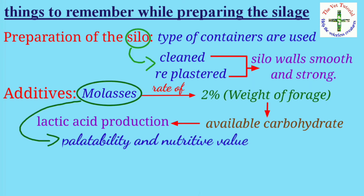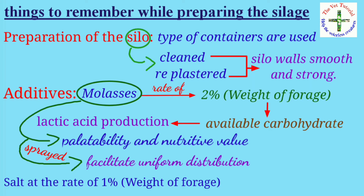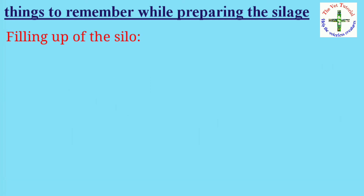Molasses also increases palatability and nutritive value of the silage and is sprayed over the forage to facilitate uniform distribution. Salt at the rate of one percent by weight of forage is also added to improve the palatability of silage.